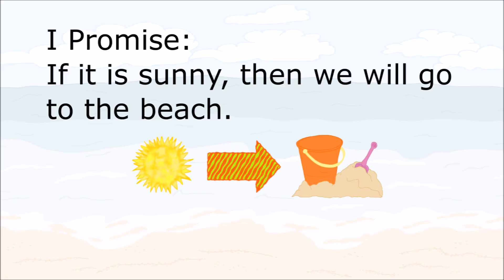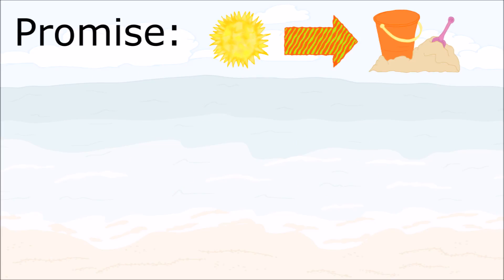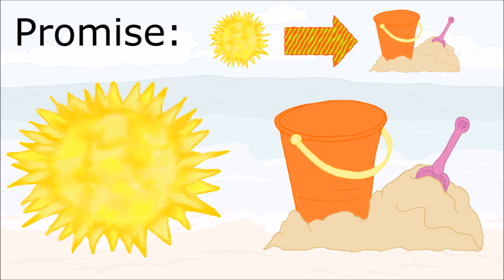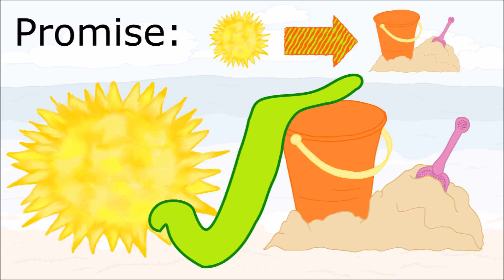Keep that promise in mind for the rest of the video. Now that you have my promise, the big question is: did I keep it or not? We have to look at what actually happened. On the day of the trip, the weather is bright and sunny, so the hypothesis — it is sunny — is true. We go to the beach, so the value of the conclusion, we go to the beach, is also true. So, did I keep my promise? Yes, I did. It was sunny. We went to the beach.